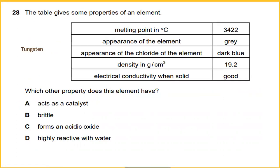The table gives some properties of an element. Melting point is 3,422 Celsius, appearance of the element is grey, appearance of the chloride of the element is dark blue, density is about 19.2 g/cm3, and electricity conductivity is good when the element is in solid. So which other properties does this element have? I would say that this criteria of properties belongs to tungsten. Tungsten hexachloride is a blue-black solid at room temperature. And tungsten also acts as a catalyst. So the answer would be A.